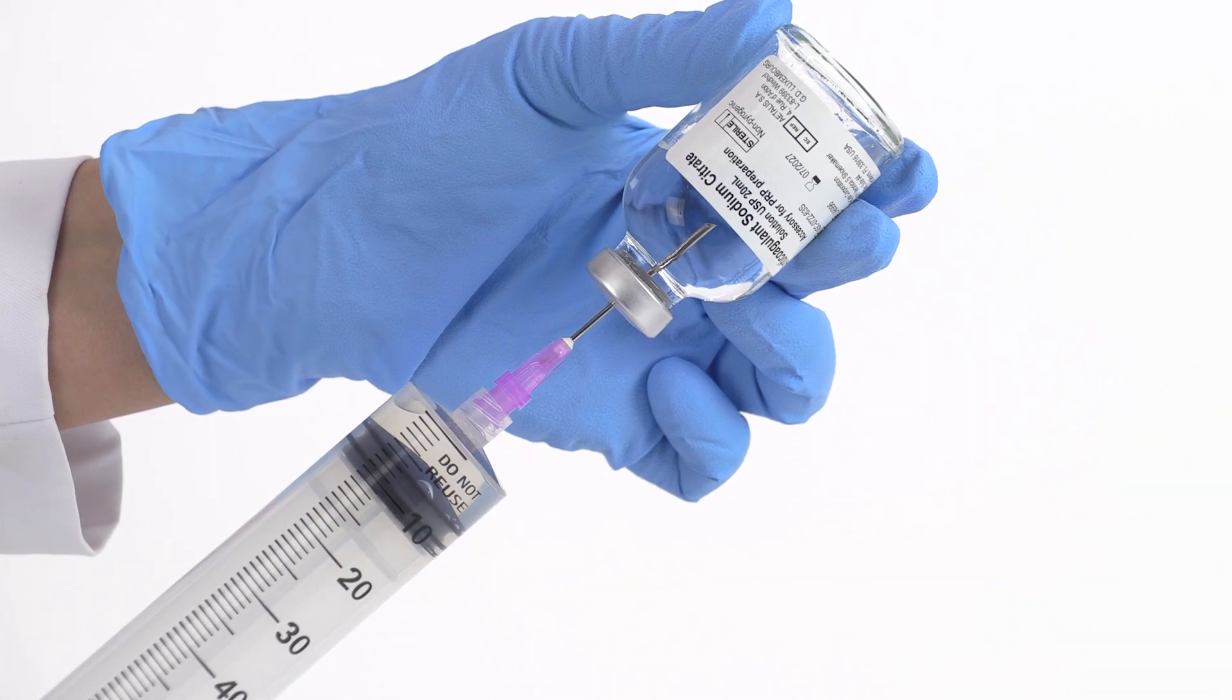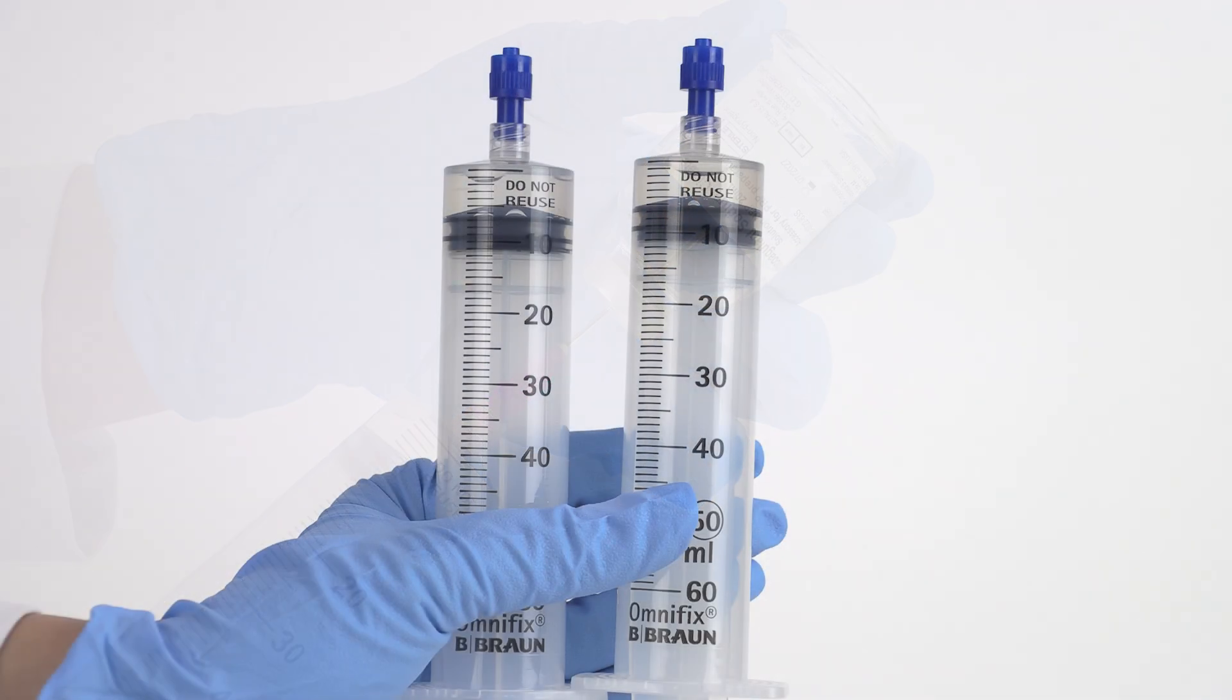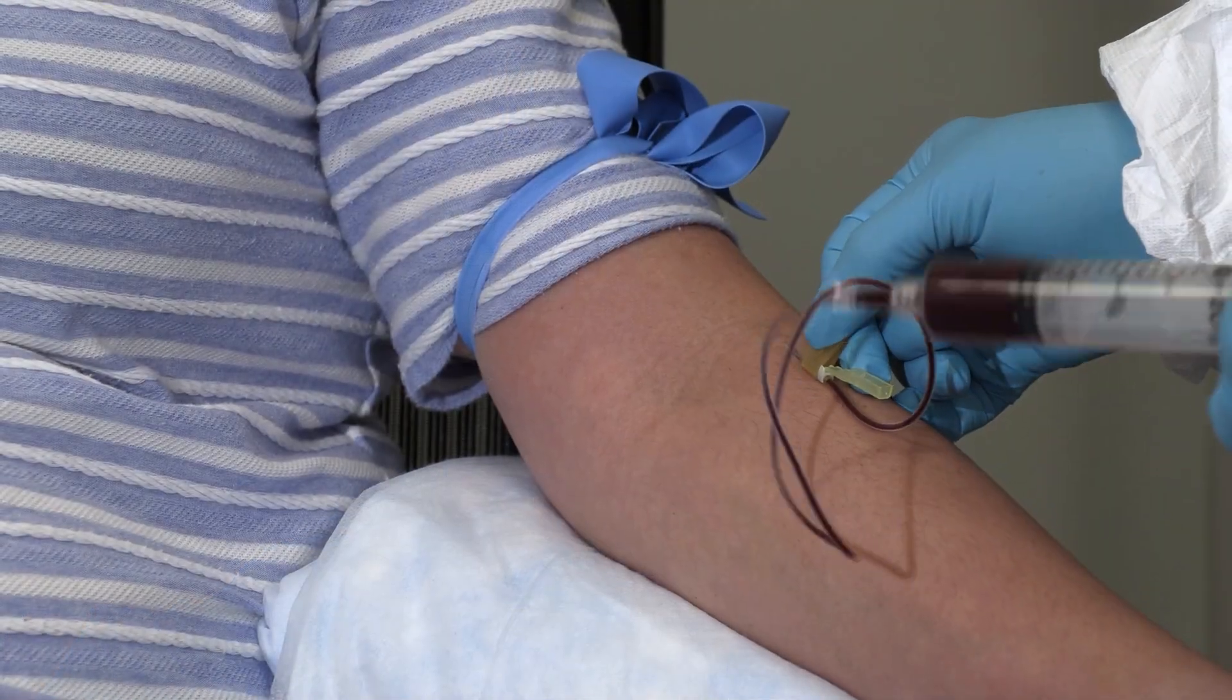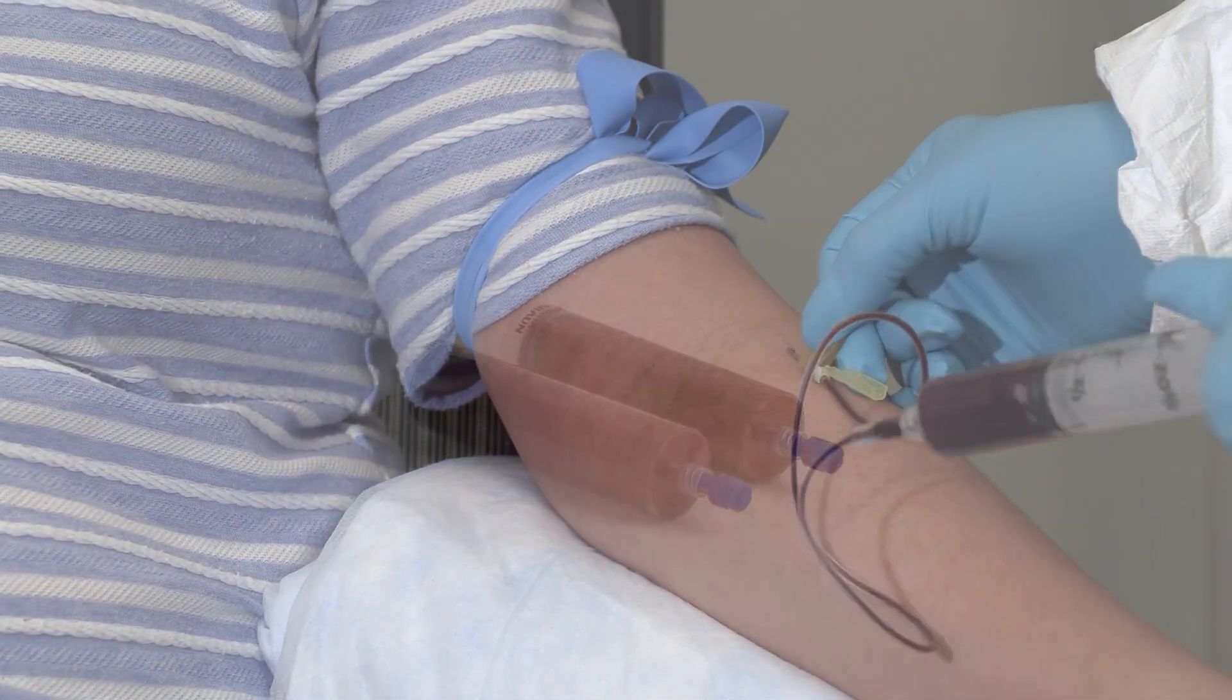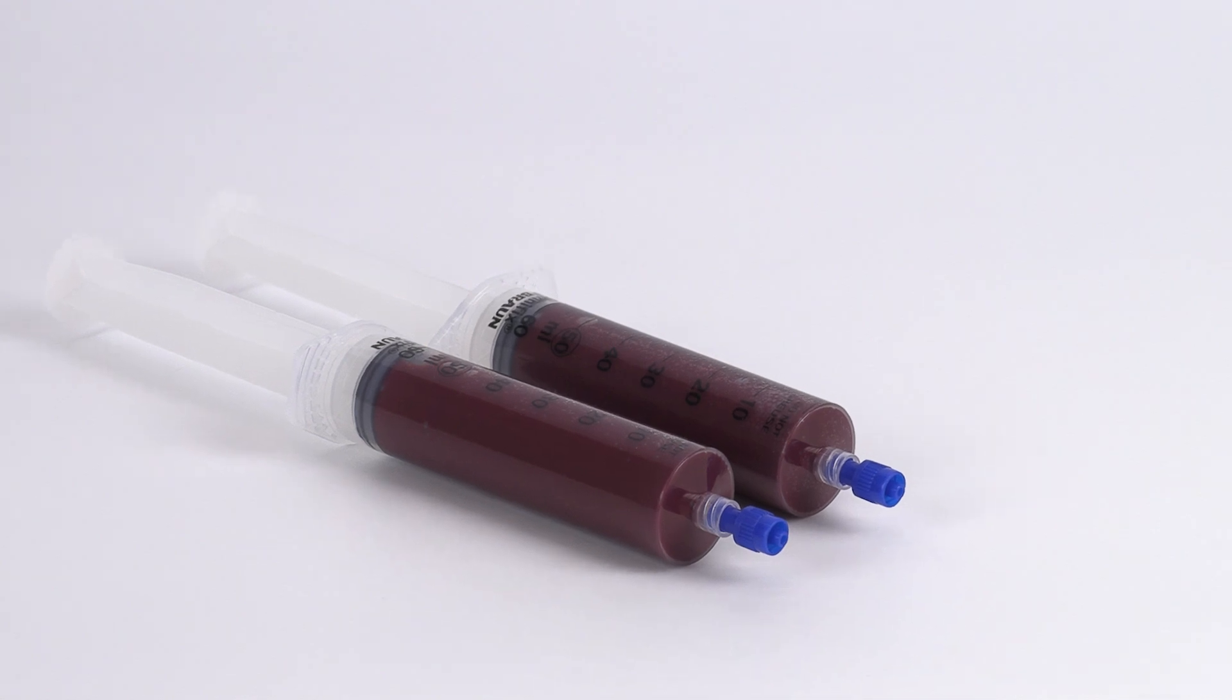Fill each 60 mL sterile syringe with 6 mL of citrate anticoagulant. Then draw 54 mL of blood in each syringe, filling each syringe to 60 mL.